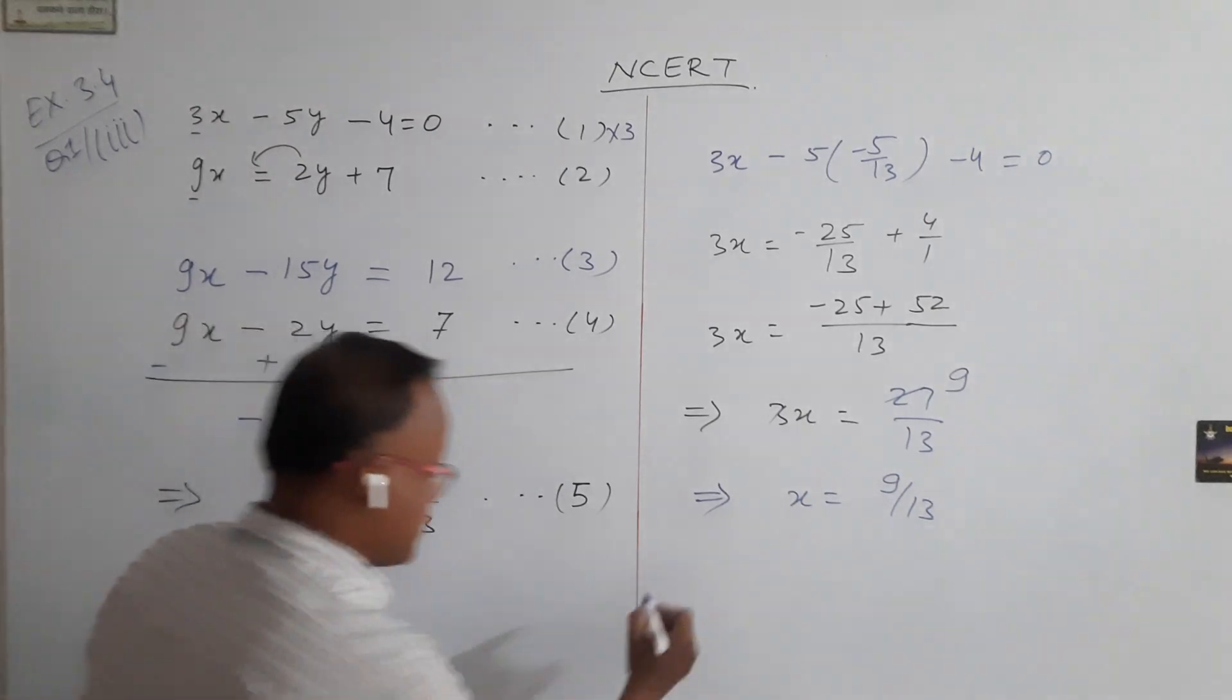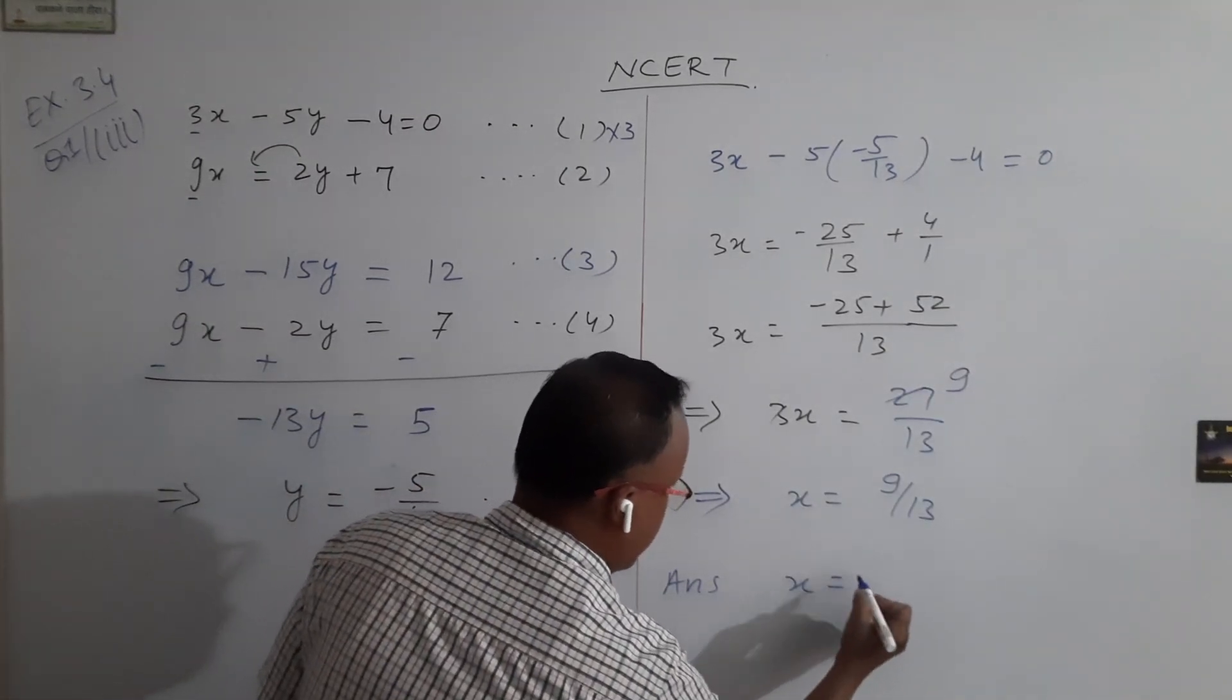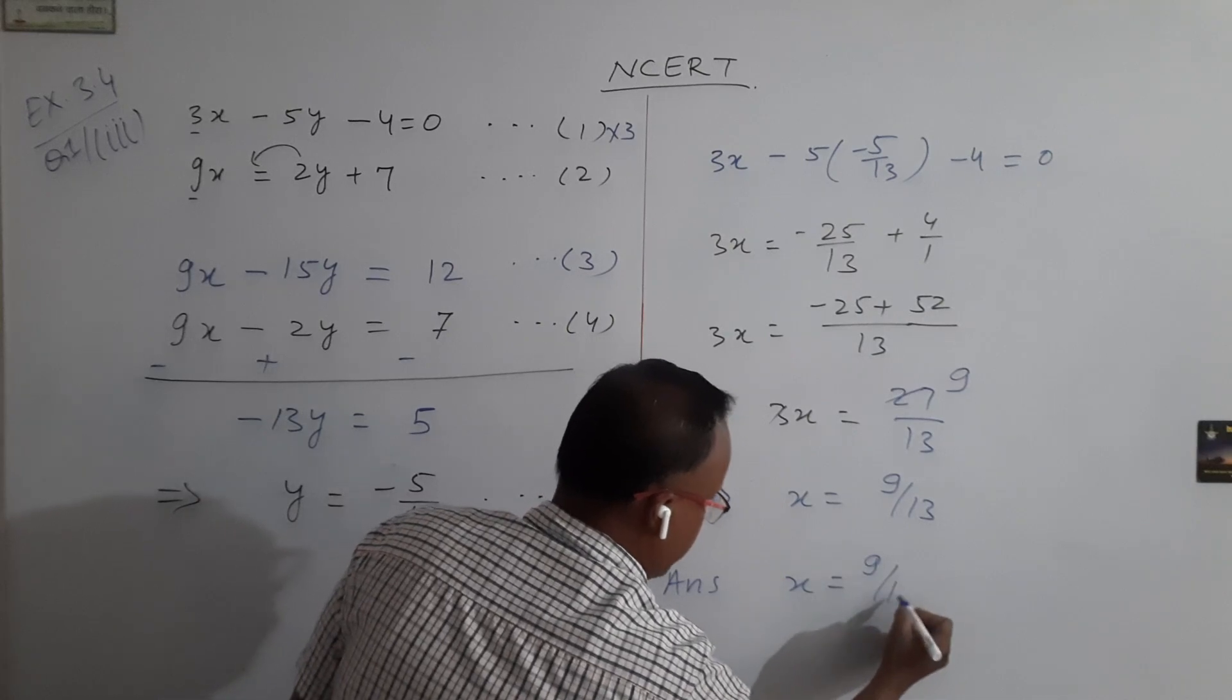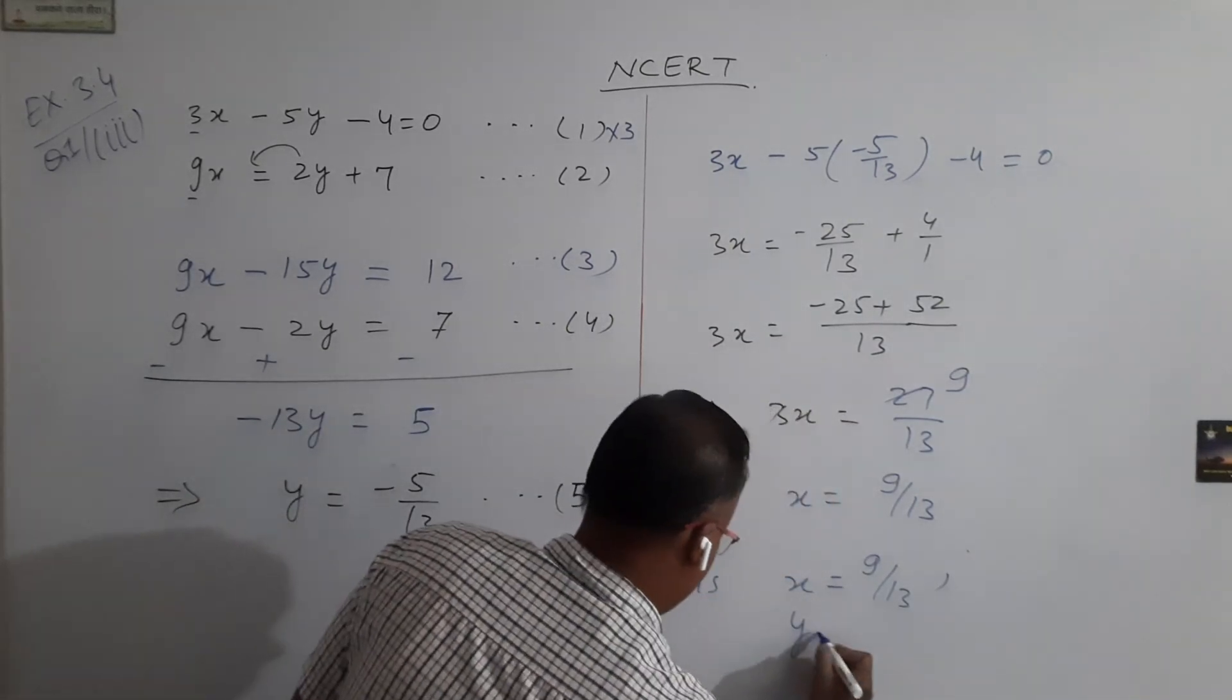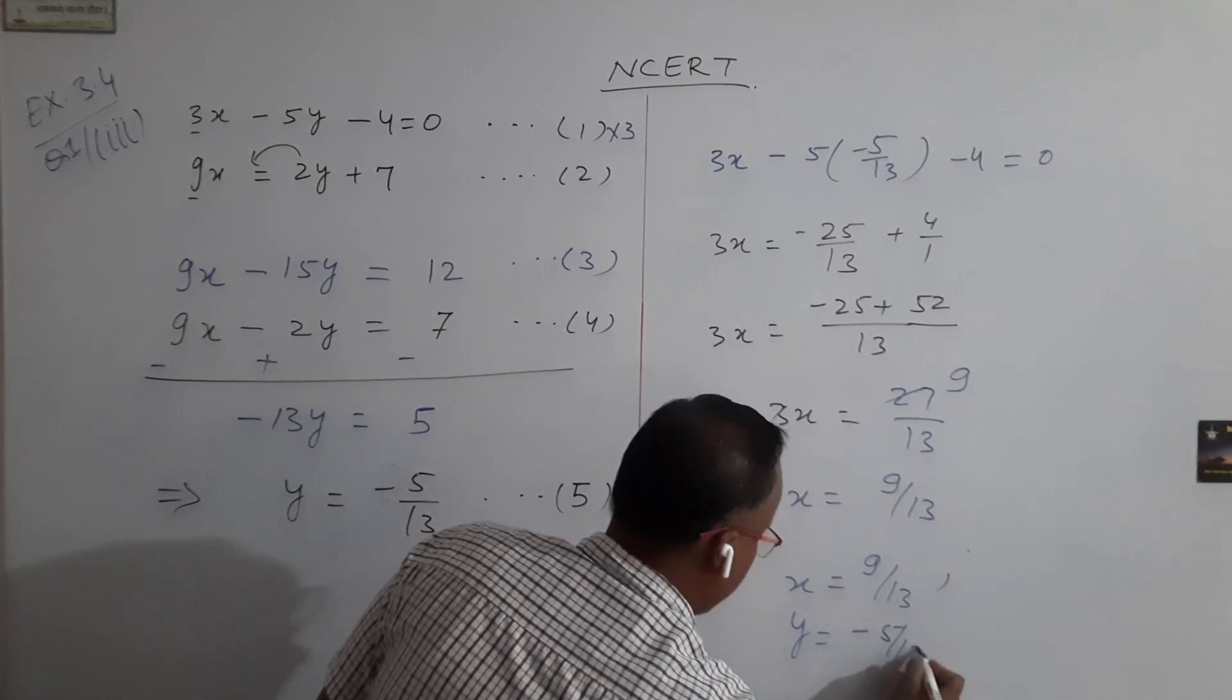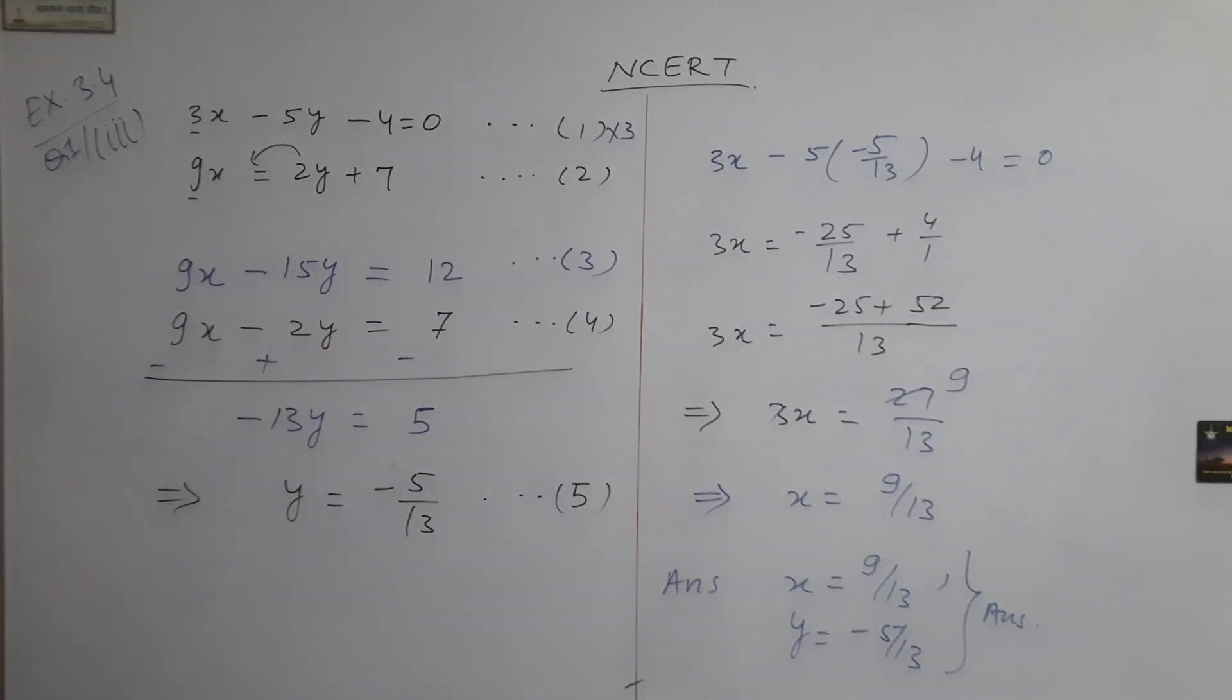So your solution of the given linear equations is x equal to 9 by 13 and y equal to minus 5 by 13. This is your final answer. Thank you very much. Please share this video to your classmates. Thanks a lot.